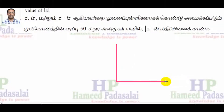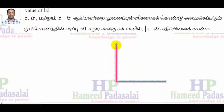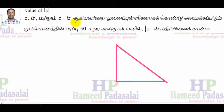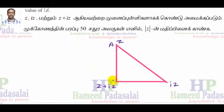Now we are going to draw the triangle with vertices Z, Iz, and Z+Iz. First we place vertex Z, then Iz, then Z+Iz. We give them the names A, B, and C respectively.